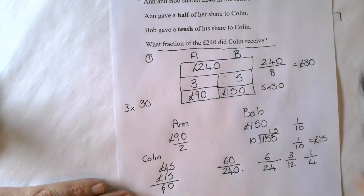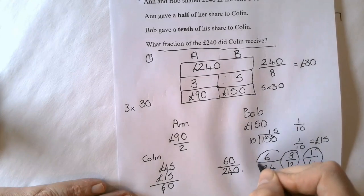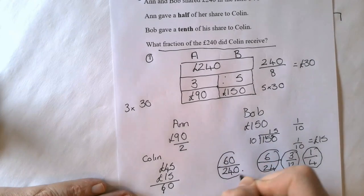So the answer to the question, what fraction of the 240 pounds did Colin receive? Either of these answers will give you it. But it's always worth simplifying, because a lot of times in an exam it will ask for simplified form.